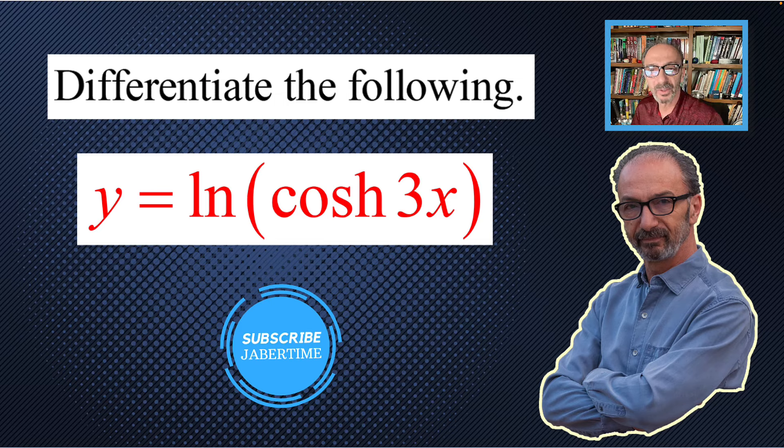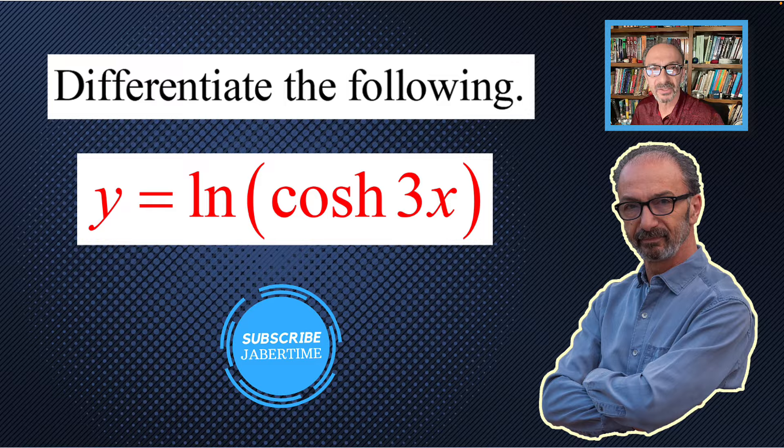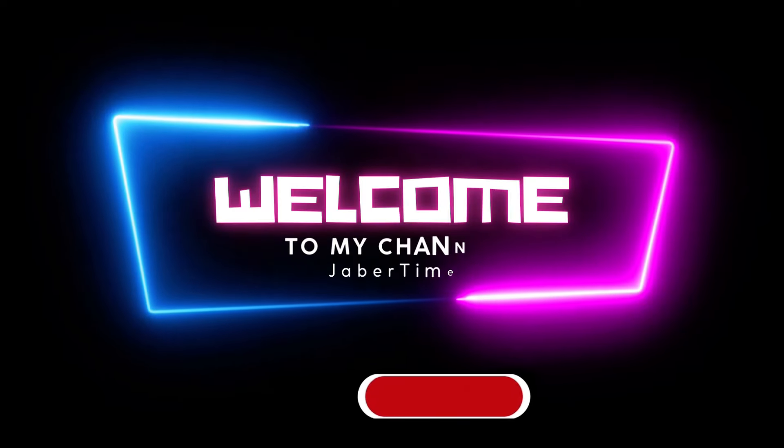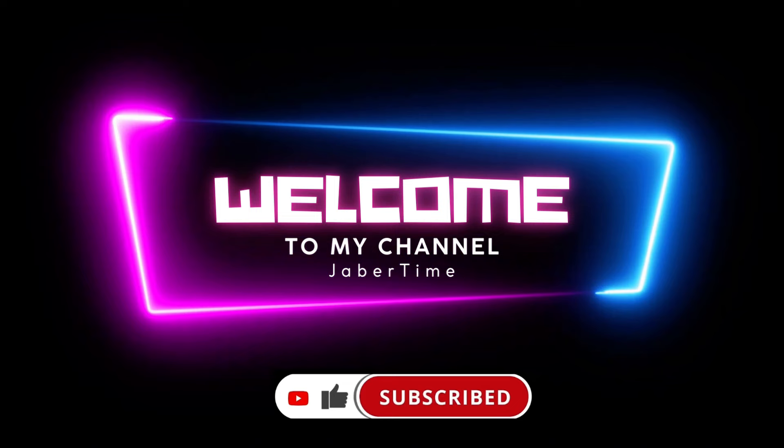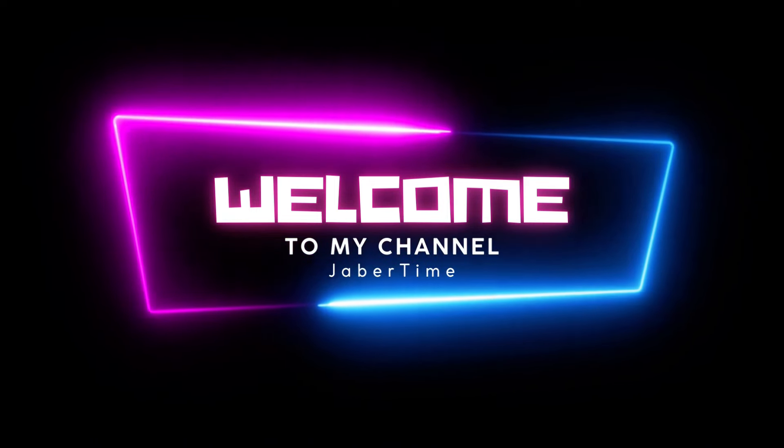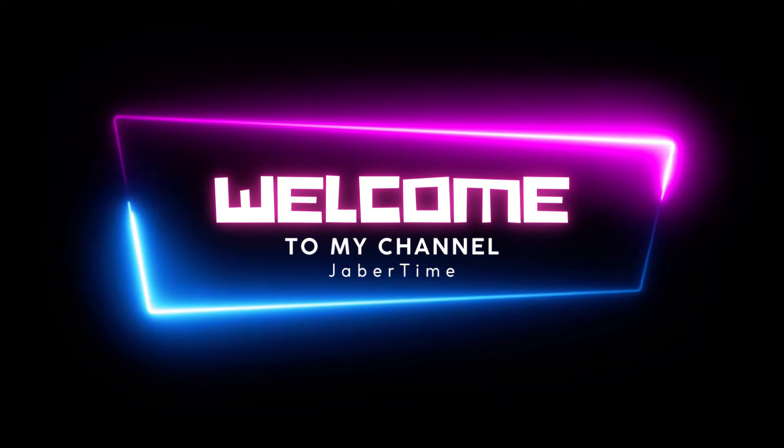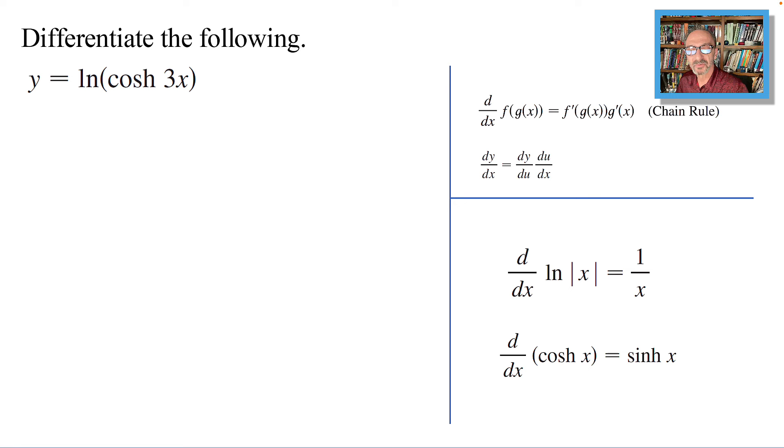Differentiate the following: y equals ln of cosh 3x. To find the derivative of this function, we will be using the chain rule, which is written in short as dy/dx equals dy/du times du/dx.